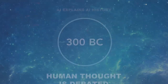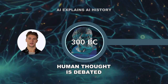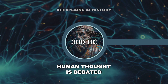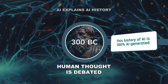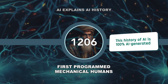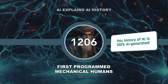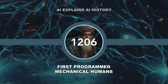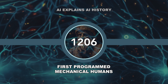Our AI journey starts back in antiquity, when ancient philosophers such as Aristotle and Plato contemplated the nature of human thought and reasoning. This laid the foundation for the development of formal logic, a crucial component of AI. In 1206, Ismail Al-Jazari, an amazing Muslim inventor, created the first programmable orchestra of mechanical human beings. He's widely considered to be the father of robotics.